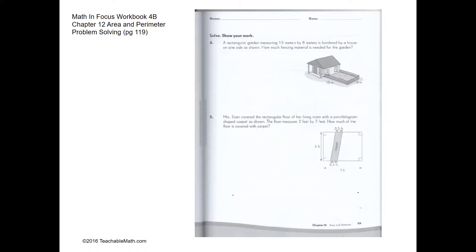For problem solving question 4, we have 15 on one side, 8 on the bottom, and 15 on the other side. So the amount of fencing material needed would be 15 plus 15 plus 8, which is 38 meters.